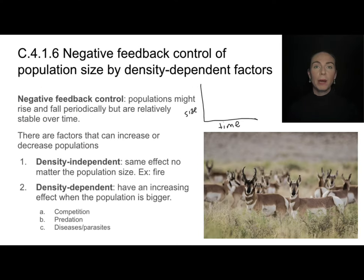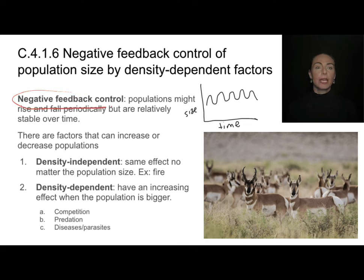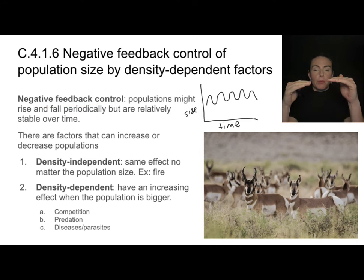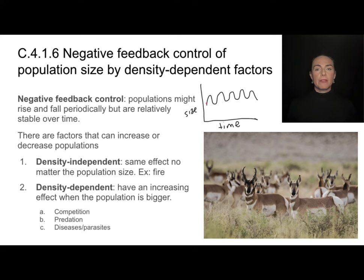If we track population data over long periods of time, we notice a continual up-and-down cycle, but populations remain relatively stable overall. This is because populations are under what we call negative feedback control. Negative feedback means there are factors in the environment that bring populations down when they get too high, but also allow those populations to rebuild when they get too low, producing fluctuations that are stable over time.